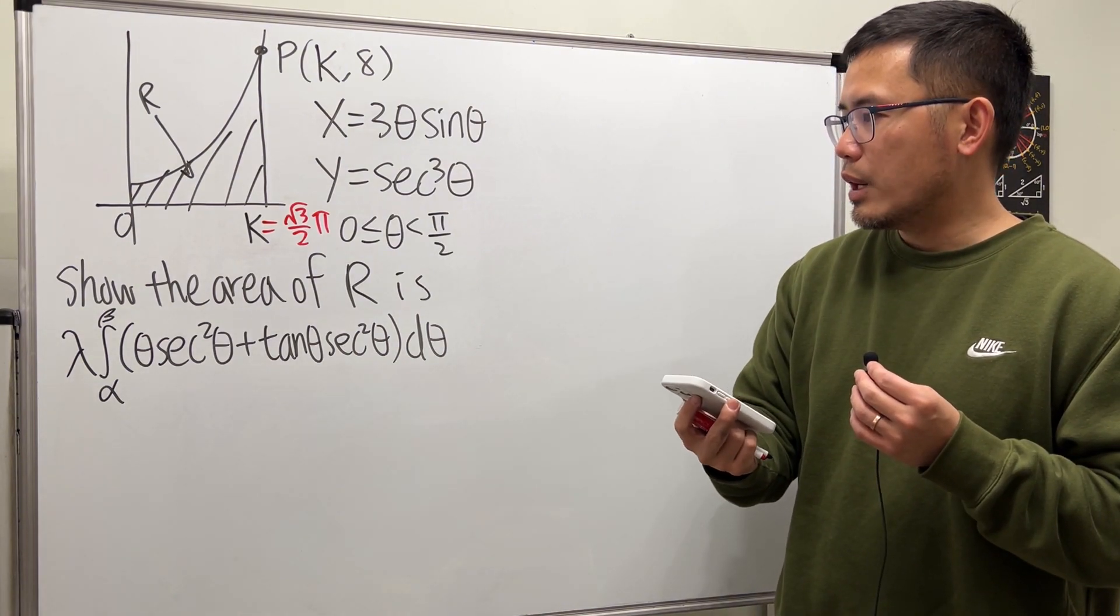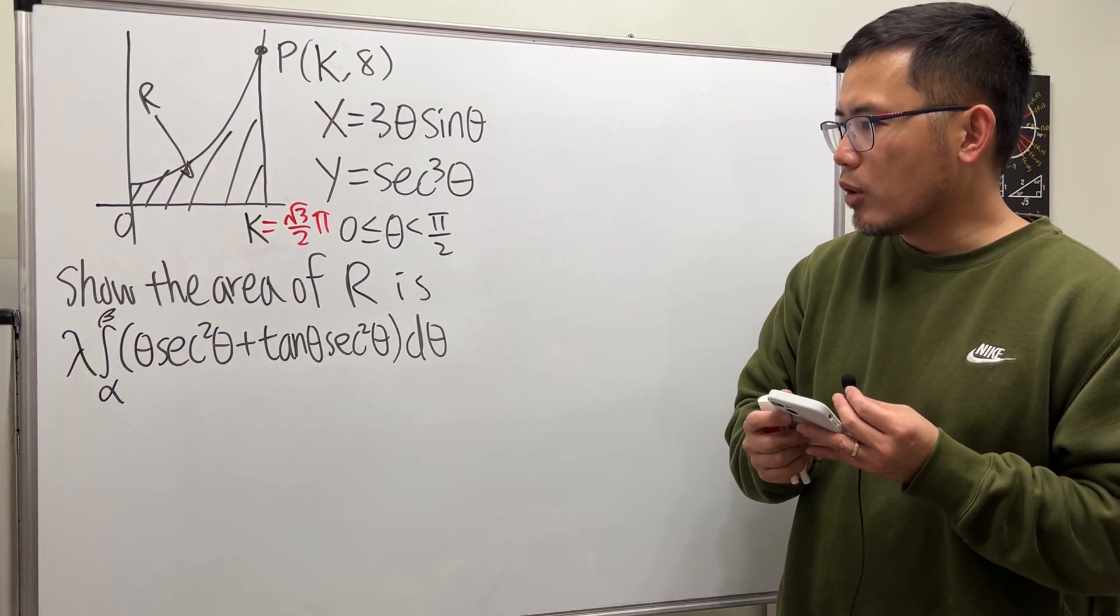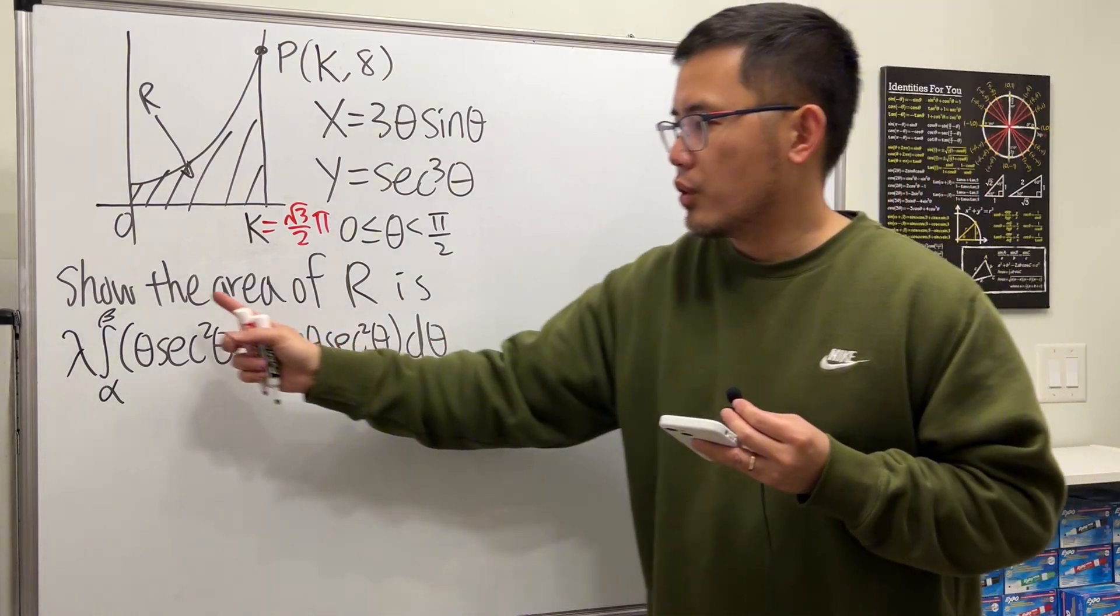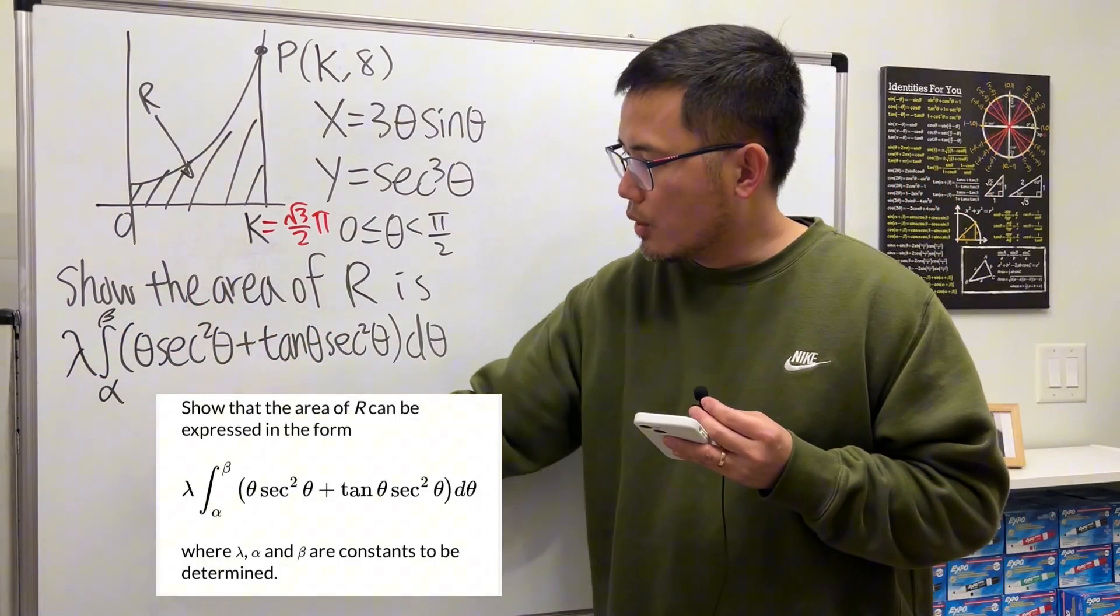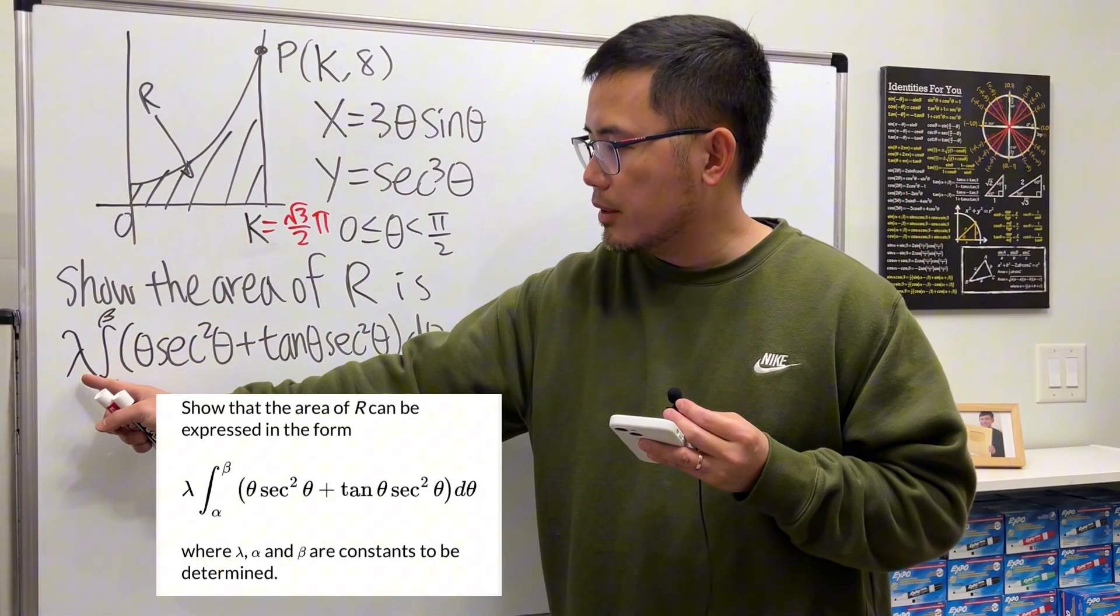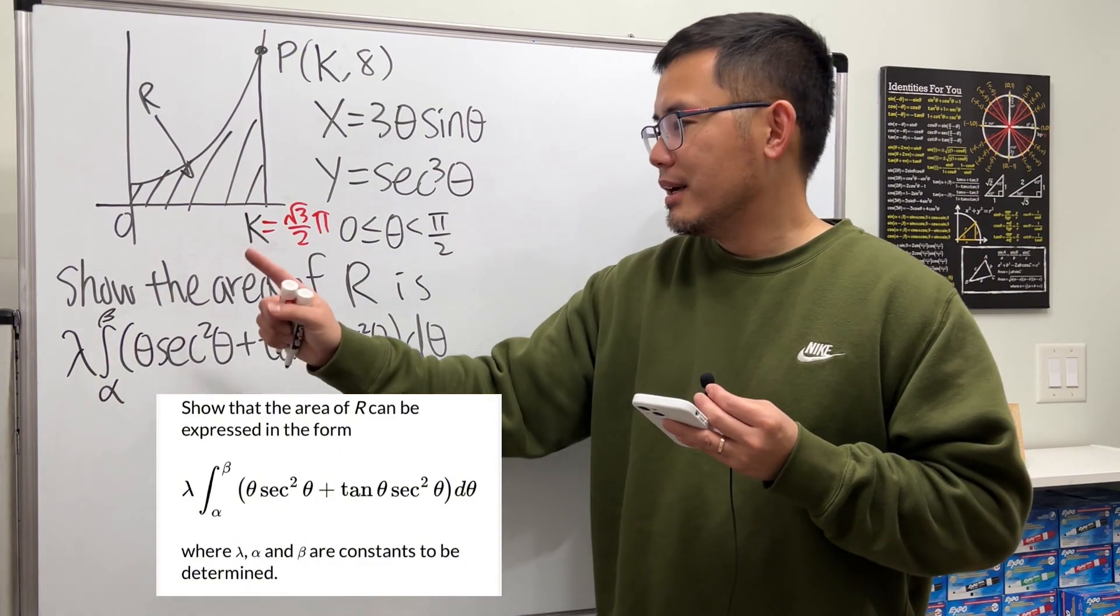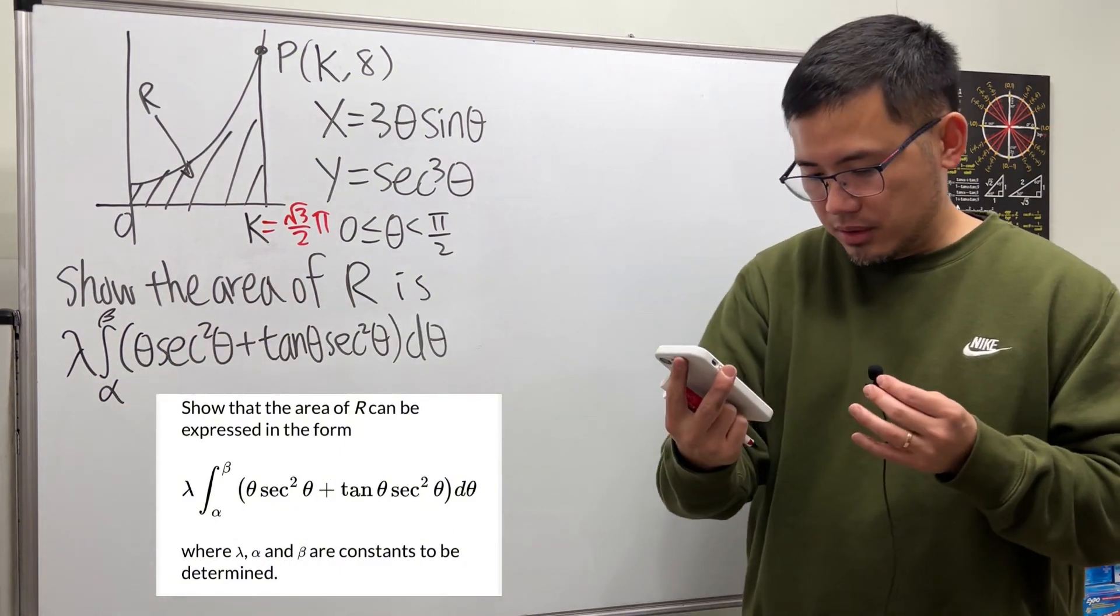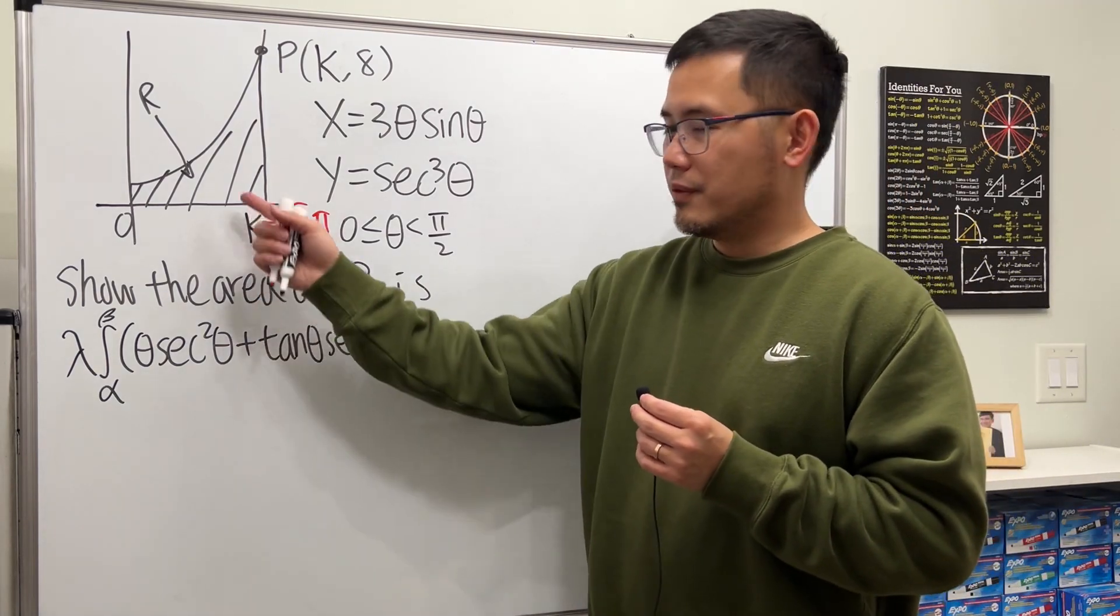We are going to find the area for the region R, but this time it gave us the answer right here. However, we have α, β, and also λ - these constants are to be determined.